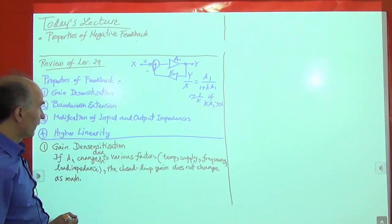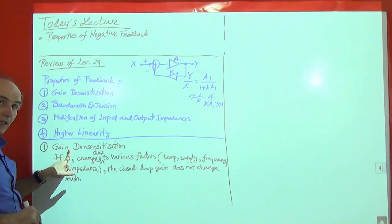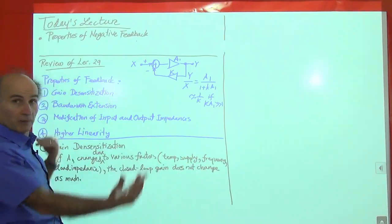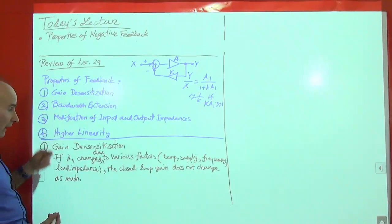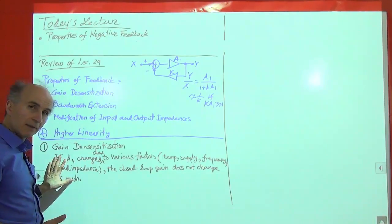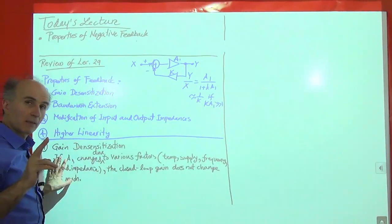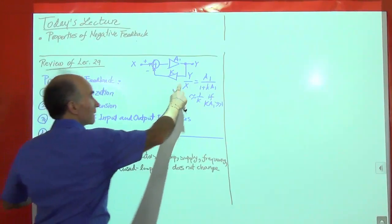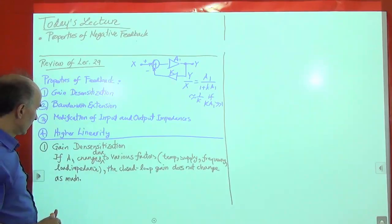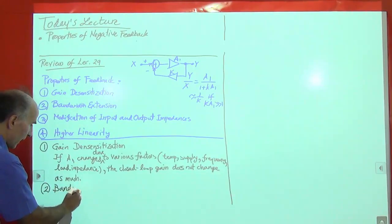What is really interesting is that the other benefits we listed actually fundamentally go back to the gain desensitization concept. If the gain is not very sensitive to frequency, it means that the bandwidth is larger. That's all we need to say about gain desensitization, because it's just a direct result of this equation: if the loop gain is much greater than 1, then the closed-loop gain is not a very strong function of the open-loop gain.